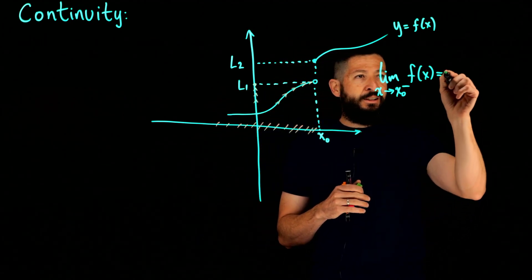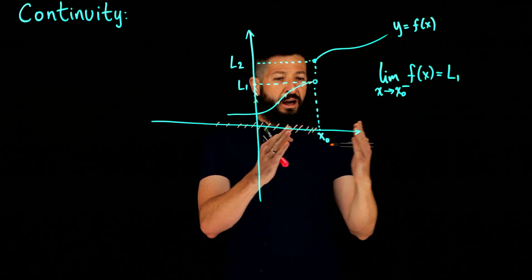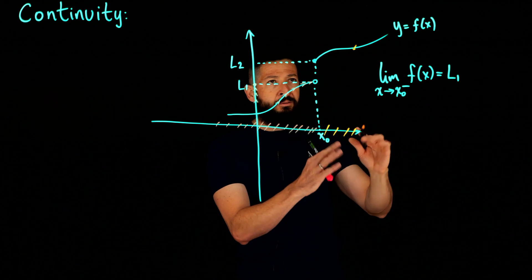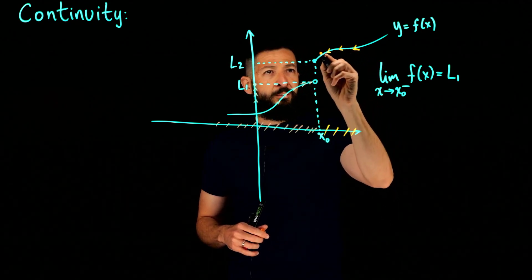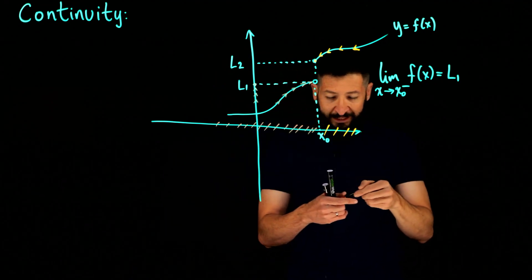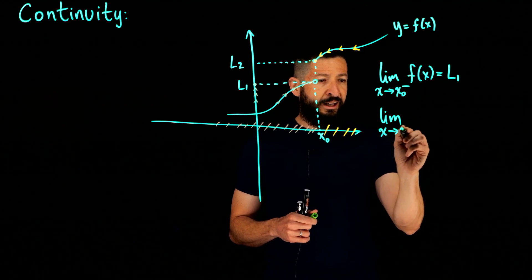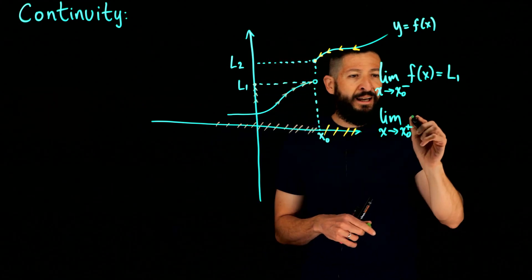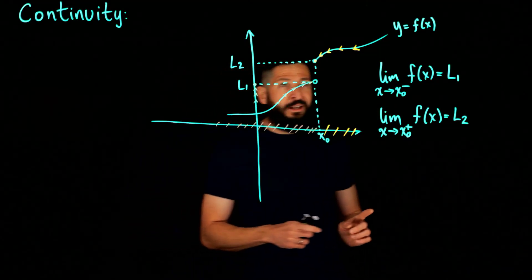So the y-coordinate you're approaching when you travel on the function from the left is L1. Now you can imagine what happens when we come to X_naught from the right — we use the other part of the interval, approaching X_naught from the right. We're going to hit L2, so the limit as X approaches X_naught from the right — the plus sign represents that — of f(x) is L2.